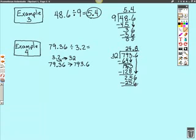And we just subtract. And 6 from 6 is 0. 5 from 5 is 0. And 2 from 2 is 0. So that we know 79 and 36 hundredths divided by 3 and 2 tenths is equal to 24 and 8 tenths. And there is our answer.